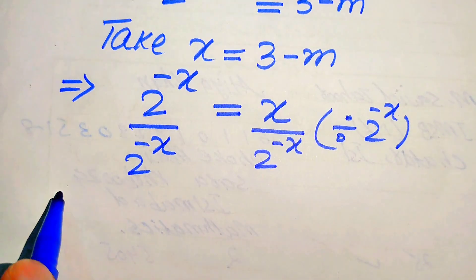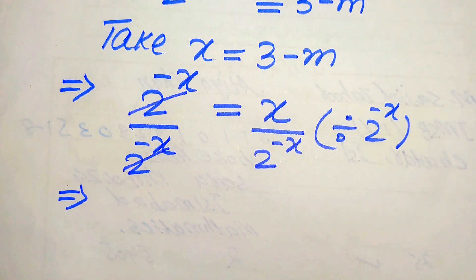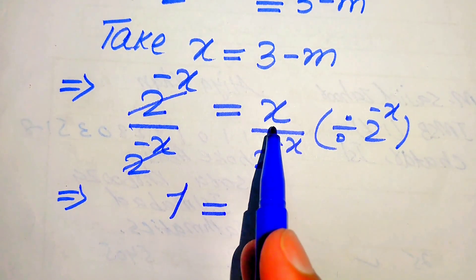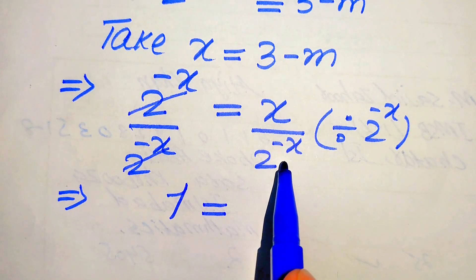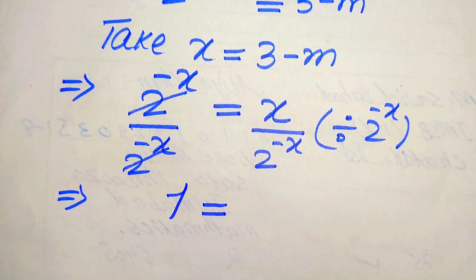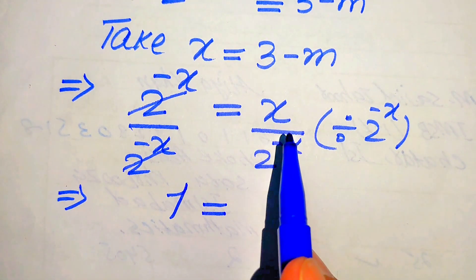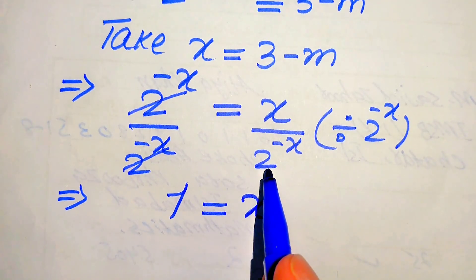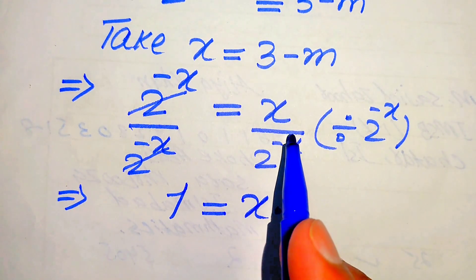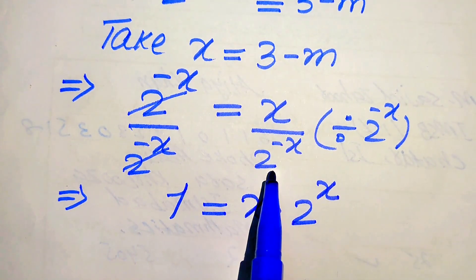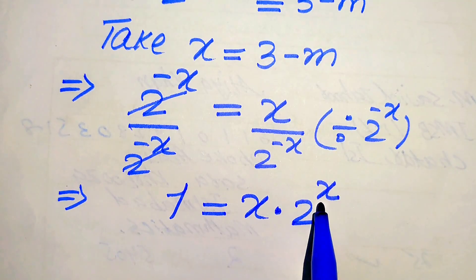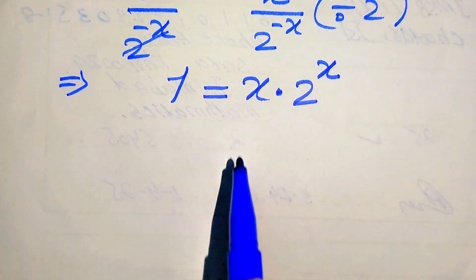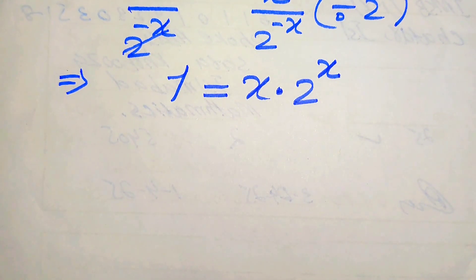In the left hand side the two terms cancel out and we get 1 is equals to x divided by 2 to the power of minus x. We move the denominator term to the top, and since the exponent is negative when moved up it becomes positive, so 2 to the power of minus x becomes 2 to the power of plus x. We now solve this using the Lambert W function.